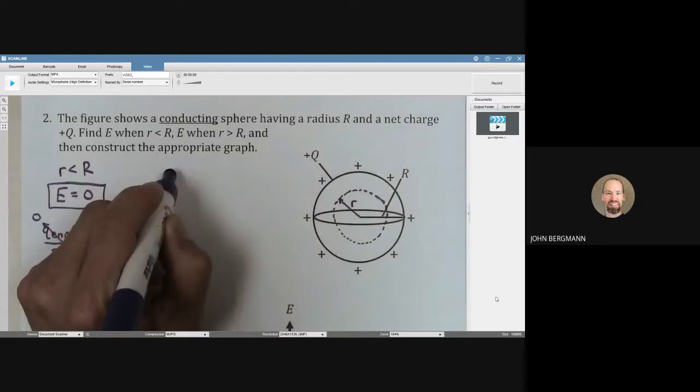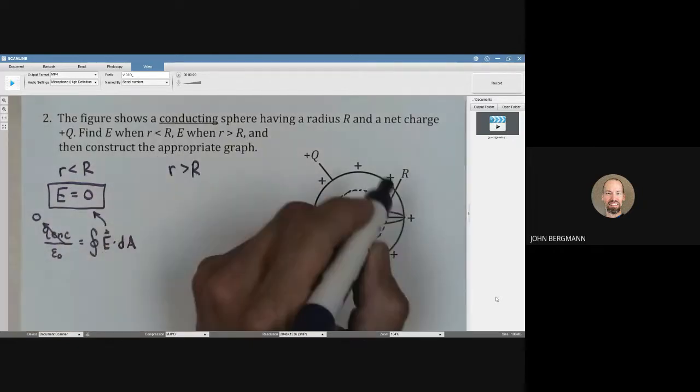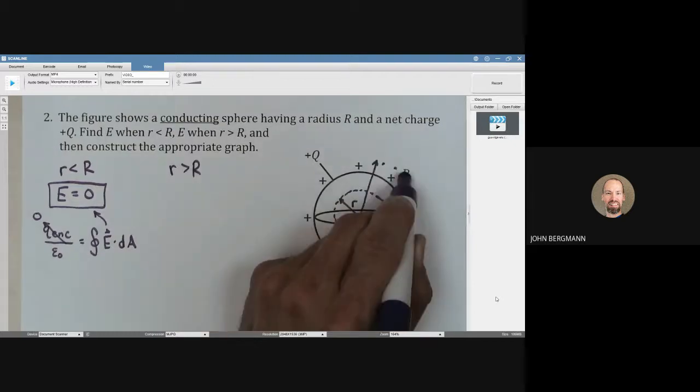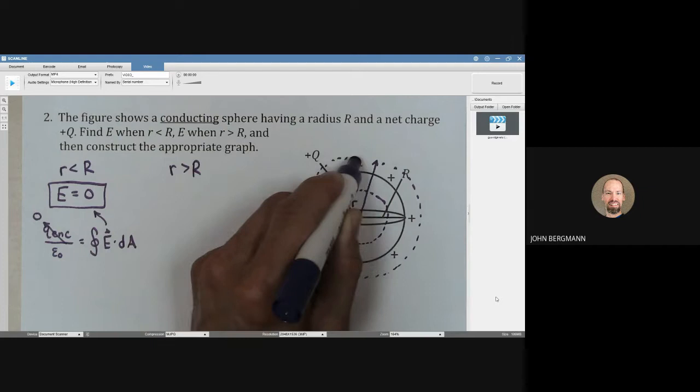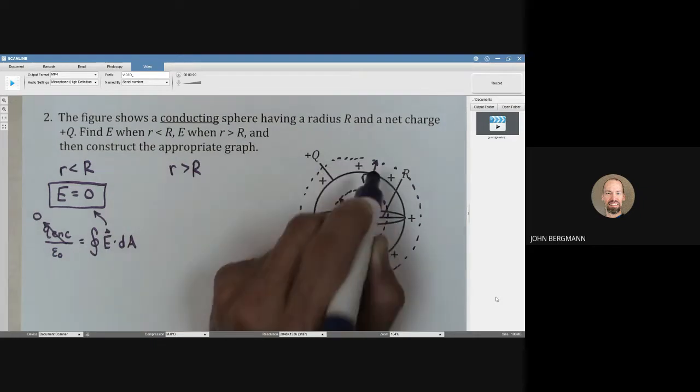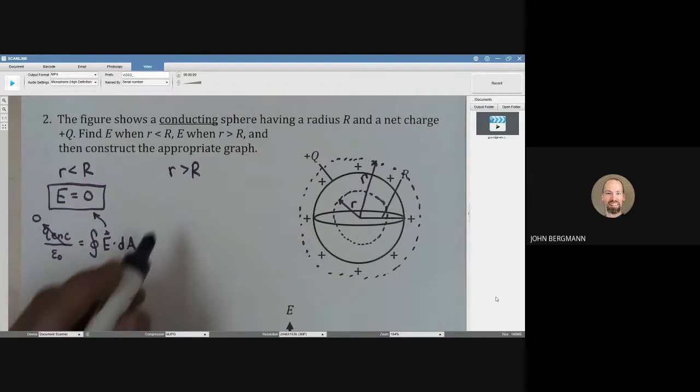What about when little r is greater than big R? So now we're going to have a Gaussian sphere. Remember, this is a sphere, it's not a circle, where now little r is bigger than big R. Let's just start off just like we always do.